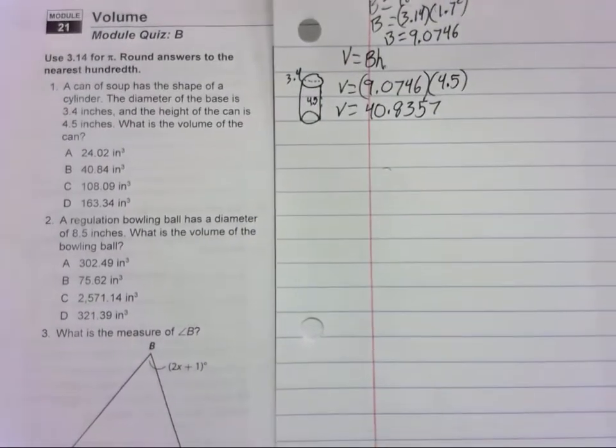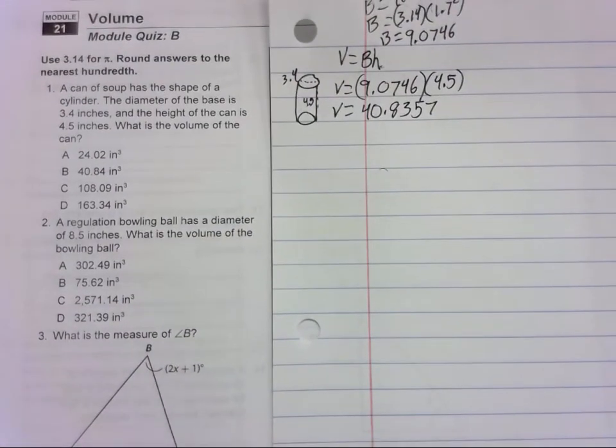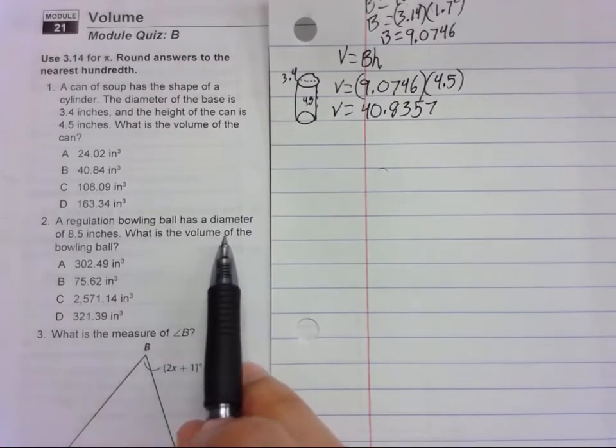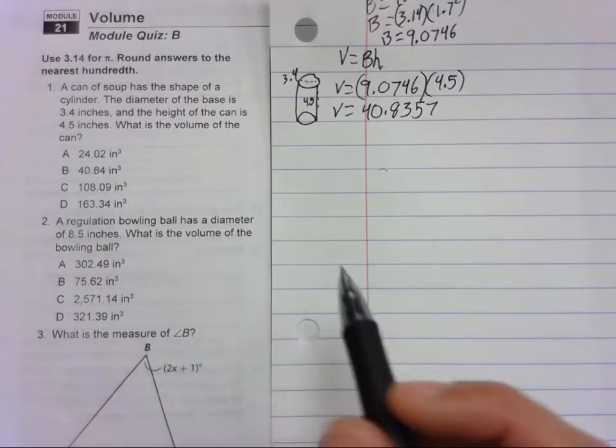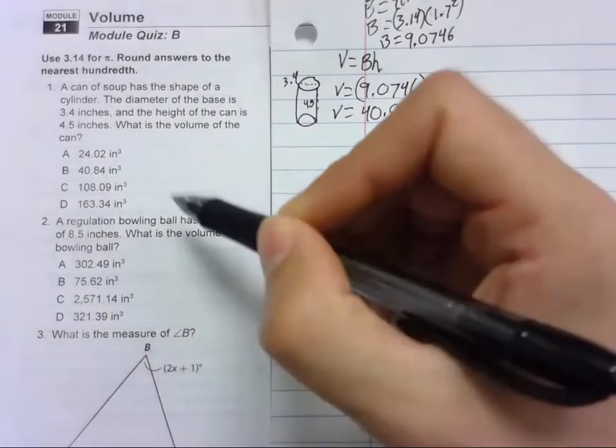So the answer to number one is B, 40.84. Number two: a regulation bowling ball has a diameter of 8.5 inches. What's the volume of the bowling ball?